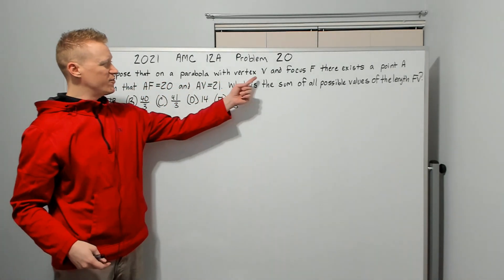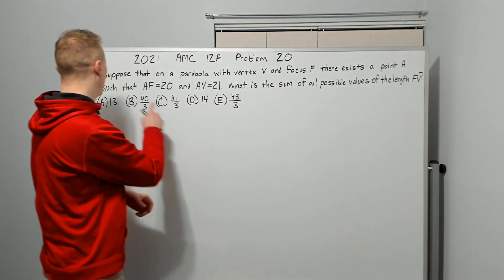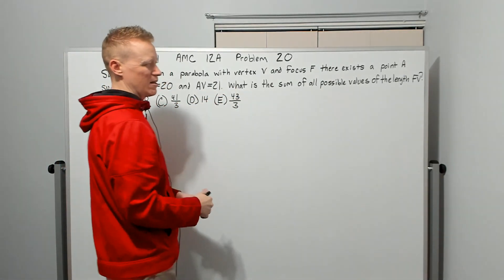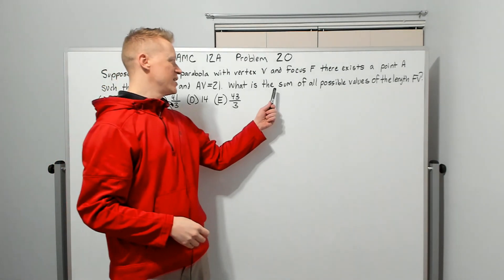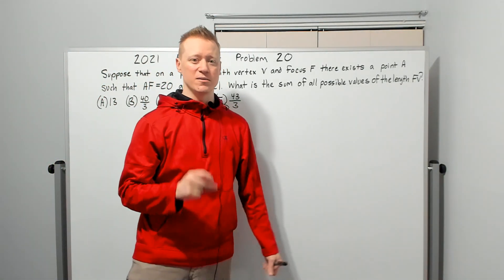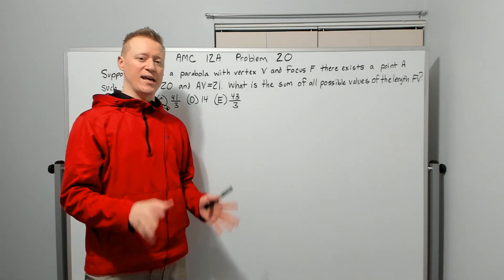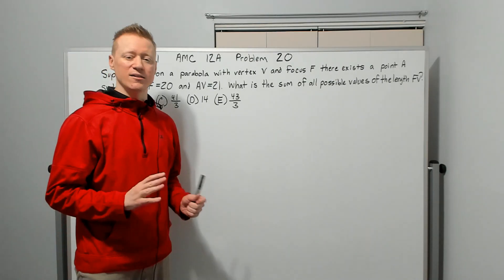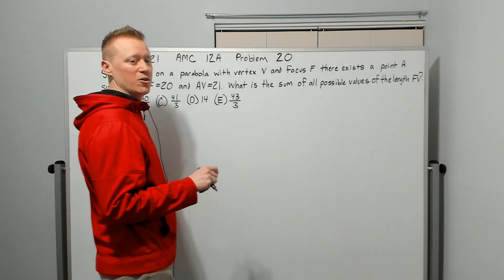Suppose that on a parabola with vertex V and focus F, there exists a point A such that AF=20 and AV=21. What is the sum of all possible values of the length FV? First things first, the sum of all possible values. Vieta's. Instantly. Think of Vieta's. Be prepared to use Vieta's formulas. If you don't know these, they're on the test almost every year in some capacity. So keep that in mind. It's an absolute must-know concept.